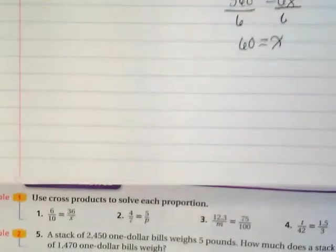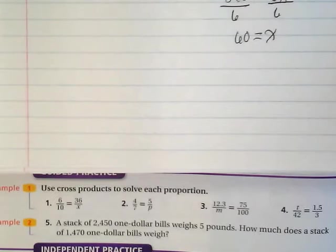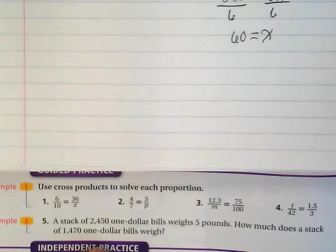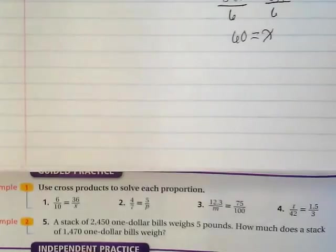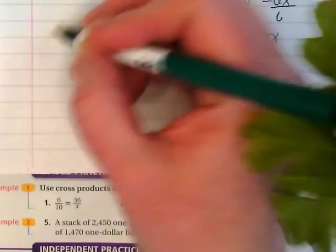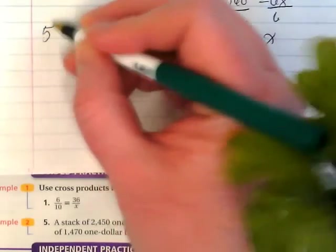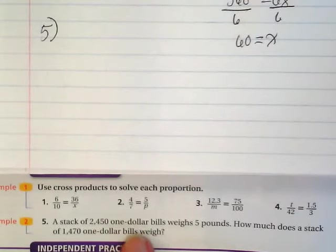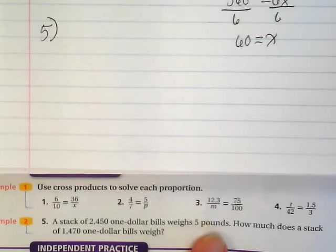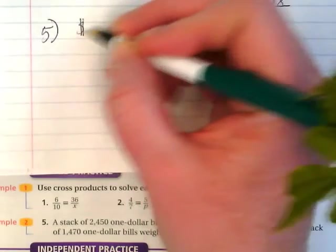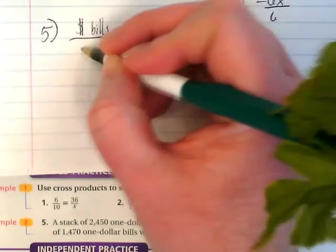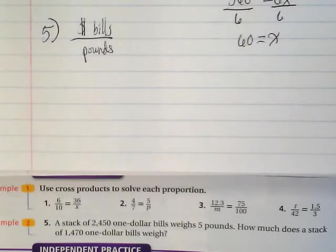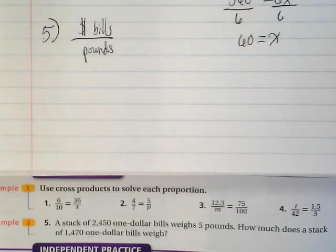Now the main reason I wanted to show you the textbook is I want to talk about how to set up the word problems. So number 5 says a stack of 2,450 one-dollar bills weighs 5 pounds. How much does a stack of 1,470 one-dollar bills weigh? Well, we're going to make what we call like a word map. Let's list that this is number 5. What are the two things that we're comparing here? You have to look at the words in the word problem. We're comparing dollar bills to pounds. So let's make a little ratio. Dollar bills to pounds.